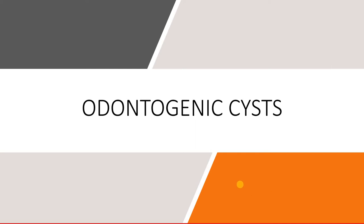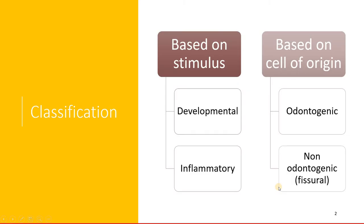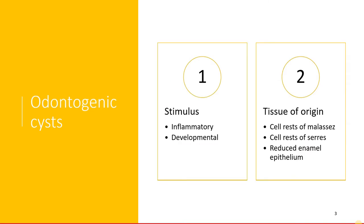Welcome back. In this series, this is the second lecture which is going to talk about the odontogenic cysts. In the last presentation, you saw that cysts can be basically divided as developmental and inflammatory. Based on the cell of origin, it can be either odontogenic or non-odontogenic cysts derived from inclusions of the facial processes. Based upon the stimulus, you have inflammatory odontogenic cysts and developmental odontogenic cysts. Both can originate from either cell rests of Malassez, cell rests of Serres, or reduced enamel epithelium.